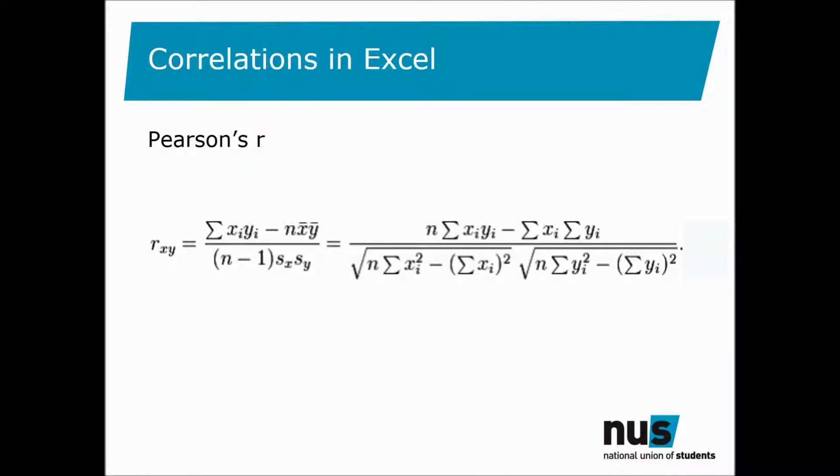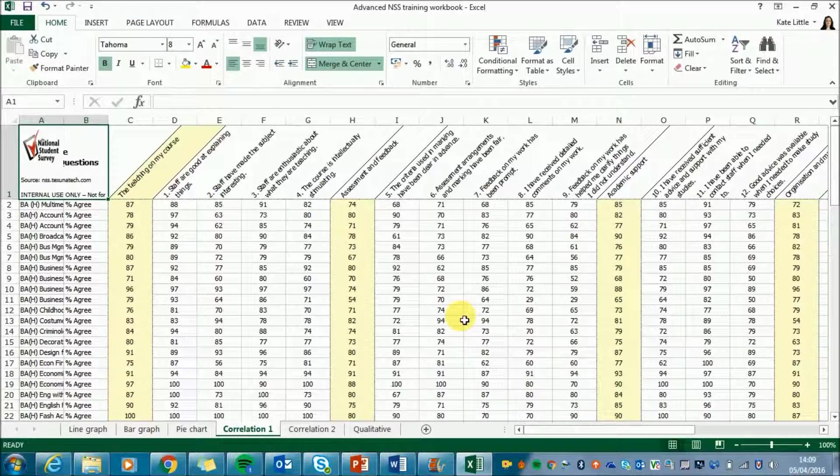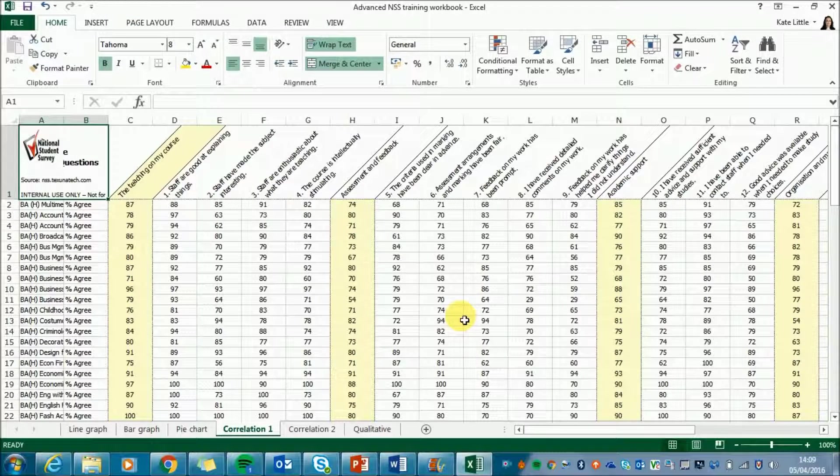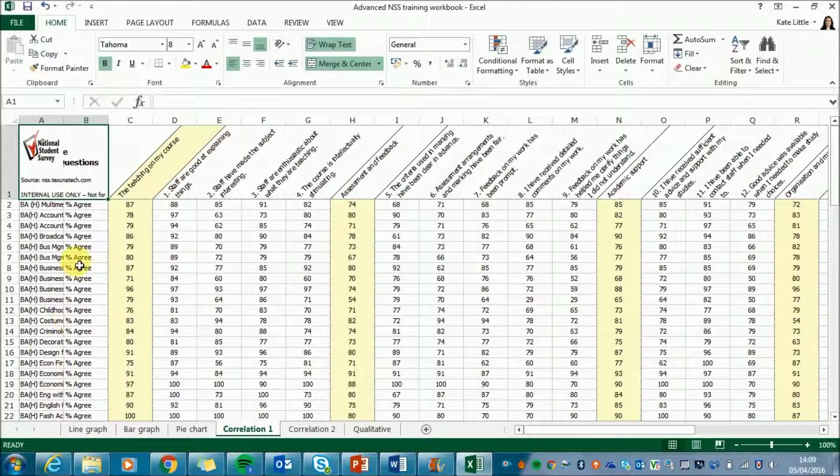Calculating a correlation coefficient uses Pearson's R, a very simple equation that you should have no problem doodling on the back of a napkin. Or you could use Excel's Pearson formula equals Pearson. So to calculate your coefficient, you're going to need to go into your advanced NSS workbook again and find the spreadsheet called Correlation 1. You can see here we've got a long list of courses and all their NSS scores. So first of all, we're going to take out the data that's relevant to us.